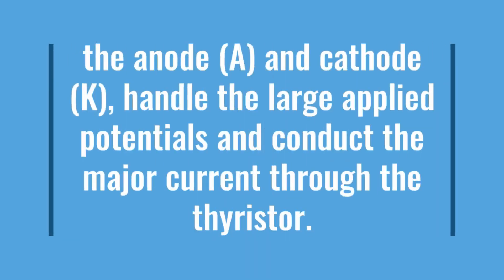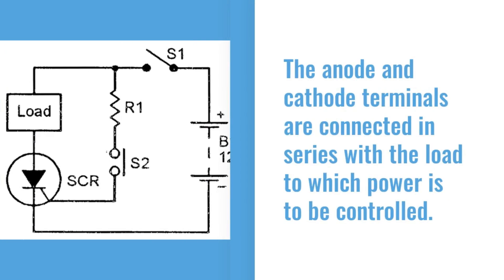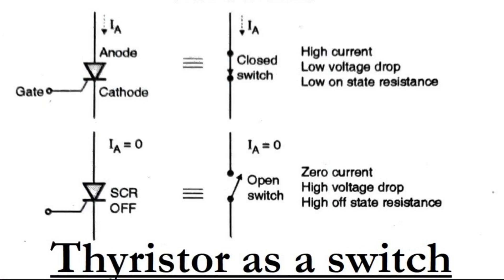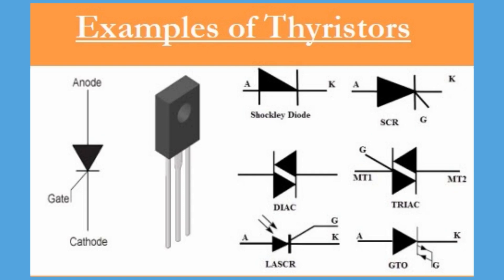The other two terminals — the anode (abbreviated A) and cathode (abbreviated K) — handle the large applied potentials and conduct the major current through the thyristor. The anode and cathode terminals are connected in series with the load to which power is to be controlled. Thyristors are used as switches for control of power flow in a circuit, and include devices such as SCRs, TRIACs, SIDACs, and DIACs, which perform important functions meeting environmental, speed, and reliability specifications.